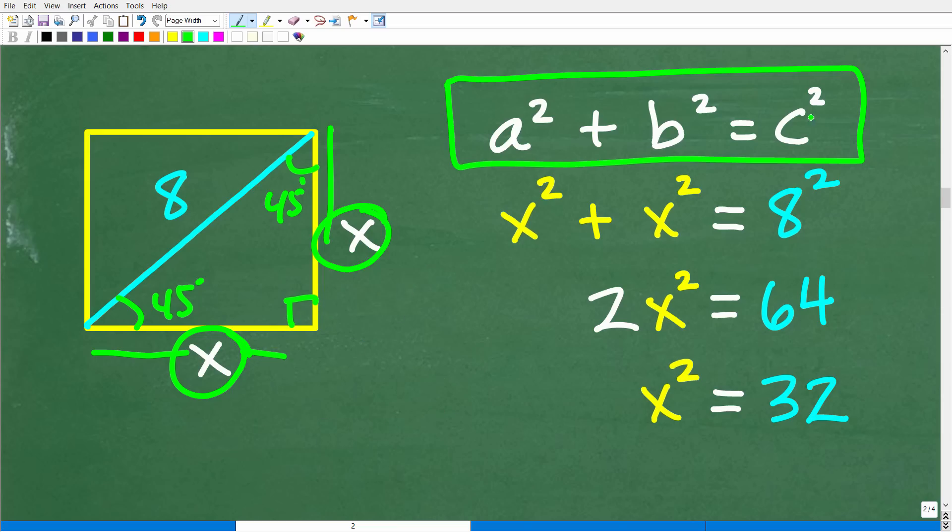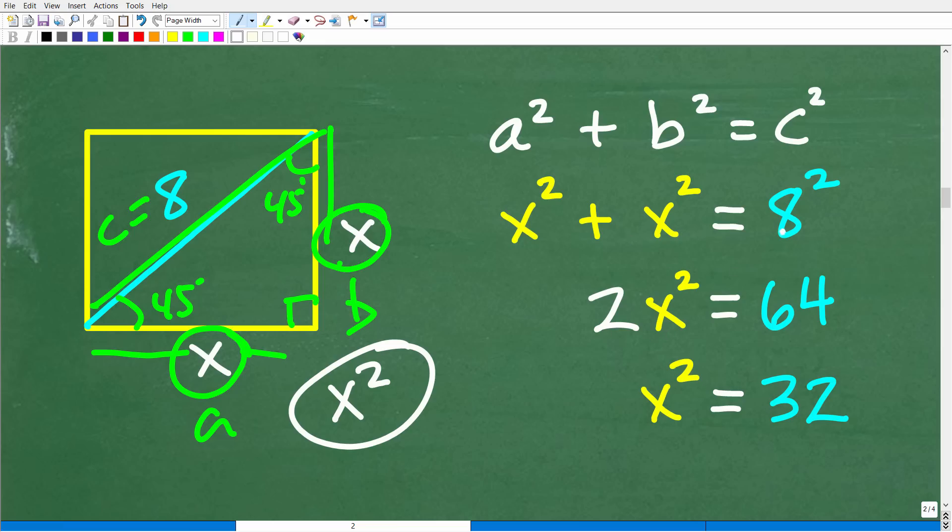So we have a squared plus b squared is equal to c squared. We'll have x squared, which is the same thing as a squared, plus b squared, which of course is going to be the same thing as x squared, is equal to c squared. That's going to be equal to 8 squared. So x squared plus x squared is 2x squared, and that's going to be equal to 8 squared, which of course is 64. To solve for x squared, all I need to do is divide both sides of the equation by 2, and I get x squared is equal to 32.